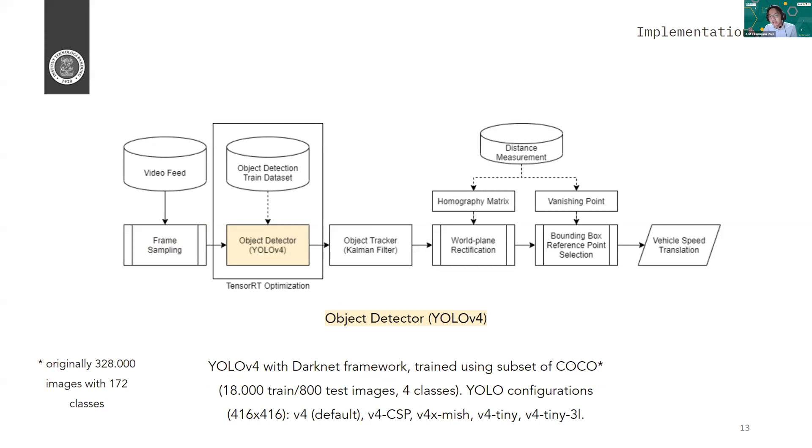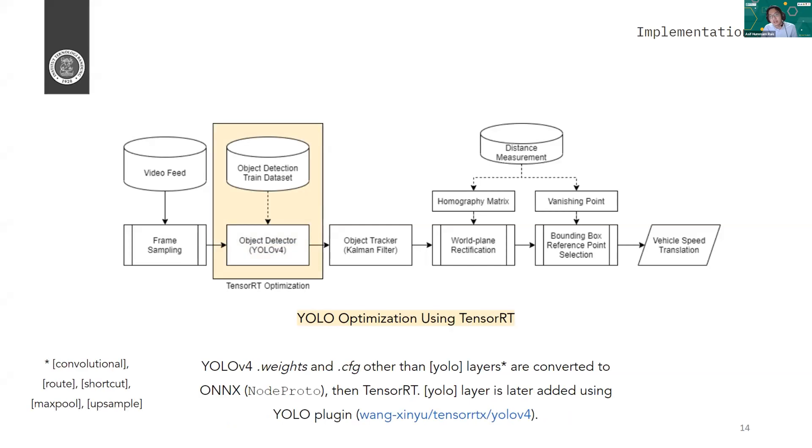Okay, so the next one is optimization using TensorRT. So TensorRT is actually a framework from NVIDIA that can convert any model that is defined in ONNX format to an optimized model. So basically, if you use machine learning, it has the values of the weights or the values that are being passed as floating points. But if you use TensorRT, you can change it into integer with eight bits. So basically, in NVIDIA GPUs, it's much, much faster if we use integer operations rather than floating point operations. So basically, we will convert the YOLO version 4 weights and CFG after we train it. Other than YOLO layers, we will convert it to ONNX format. And then we convert it to TensorRT using the framework from NVIDIA. And later, we add the YOLO layer using the YOLO plugin from Wanhsien.